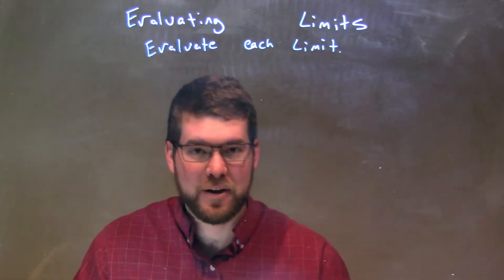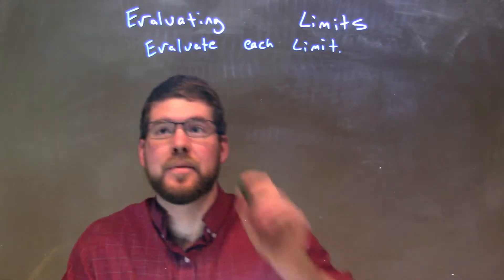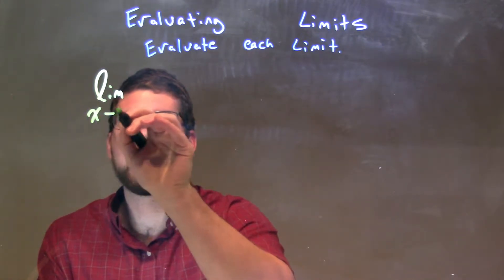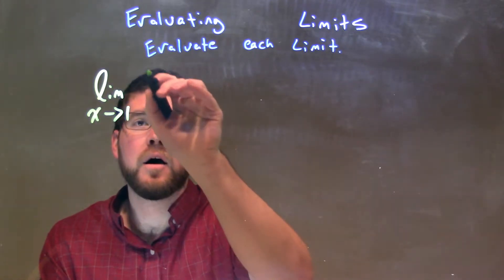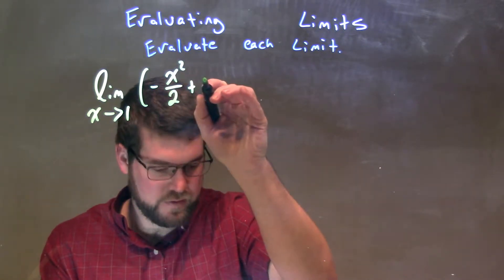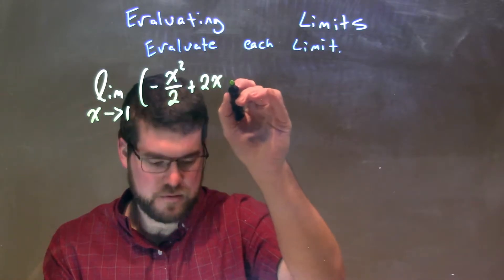We're going to evaluate each limit here. If I was given this limit, the limit as x approaches 1 of negative x squared over 2 plus 2x plus 4...